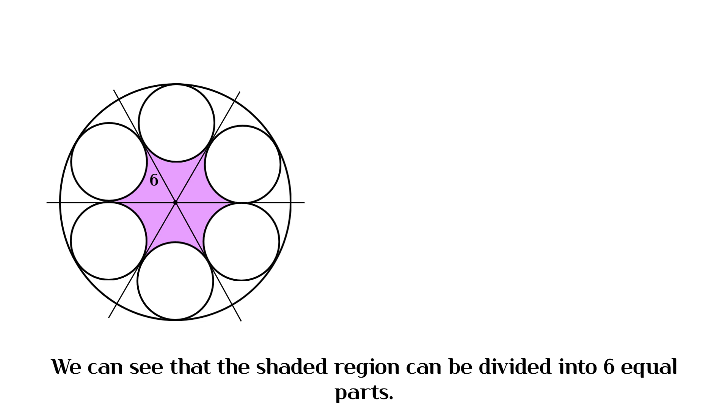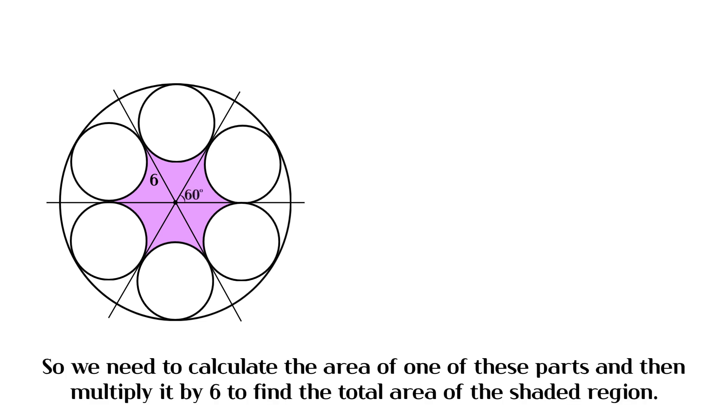We can see that the shaded region can be divided into six equal parts. So we need to calculate the area of one of these parts and then multiply it by six to find the total area of the shaded region.